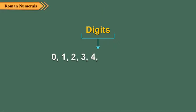As you know, in Hindu-Arabic numeration system, we use 10 symbols or digits to write any number. These symbols are 0, 1, 2, 3, 4, 5, 6, 7, 8 and 9.